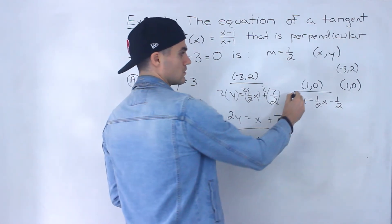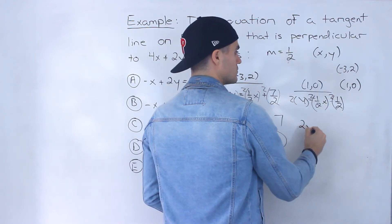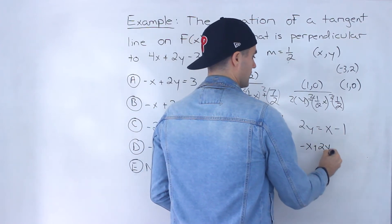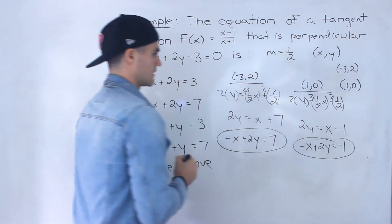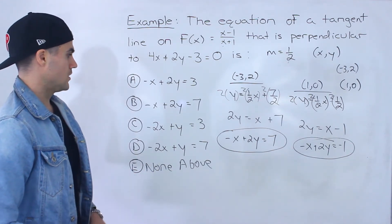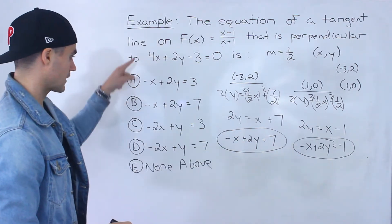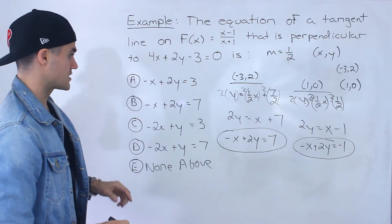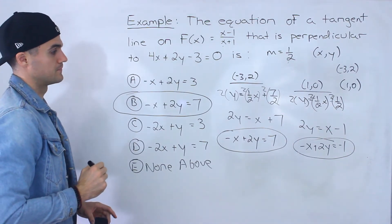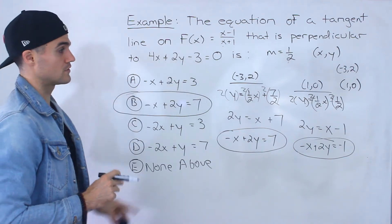Let's also convert the second equation. Multiplying by 2: 2y equals x minus 1. Bringing the x over gives us negative x plus 2y equals negative 1. Notice this second possibility is none of the answer choices. So the answer to this question is B — that's the equation of the tangent line on this function that's perpendicular to the given line.